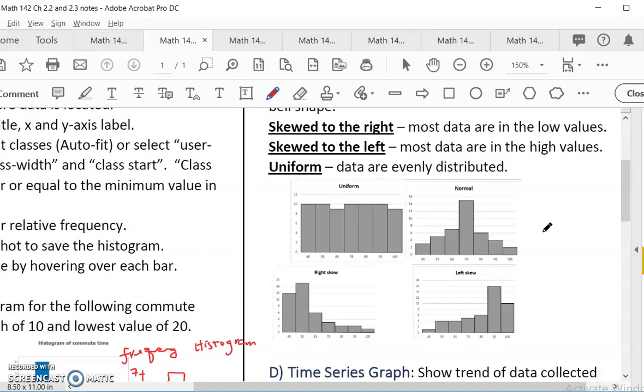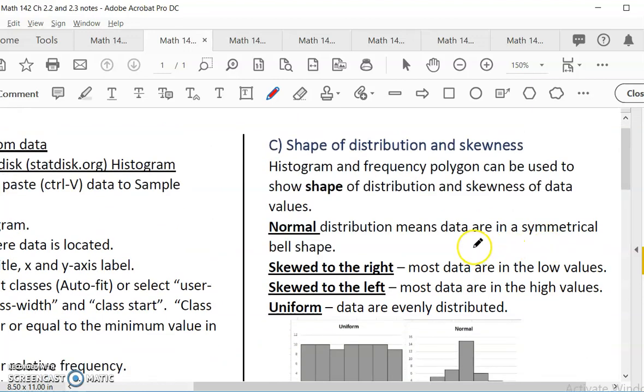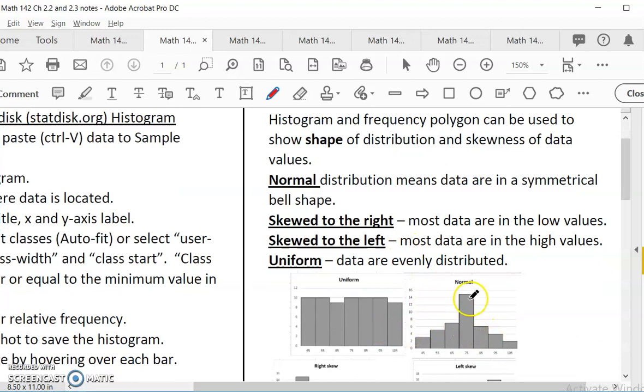Before we move on to 2.3, the most important thing we want to learn here is, after we graph a histogram, we are very interested if there is an outlier as well as what is the shape of the distribution - meaning where are most data clusters around. We have these terms that we will use. Normal distribution means the data are symmetrical and bell-shaped. Most of the data is in the middle. You have some in the low end, you have some in the high end, but most of the data cluster in the middle.